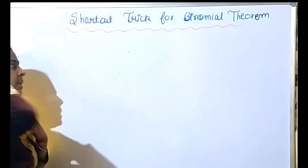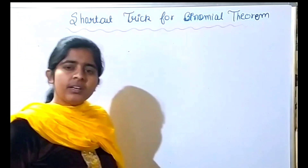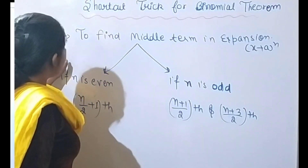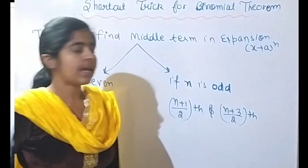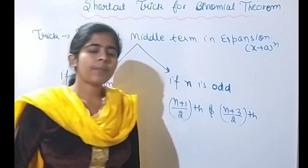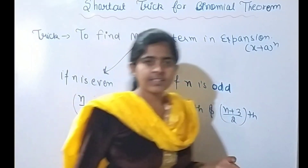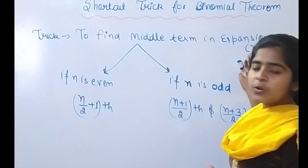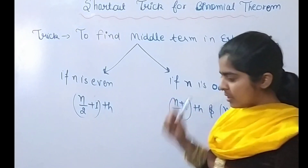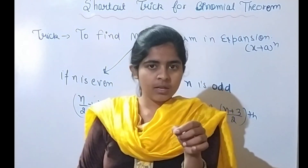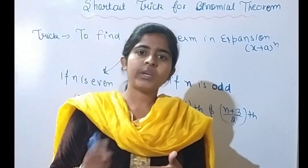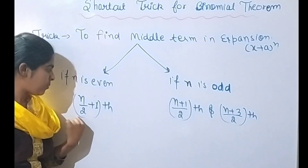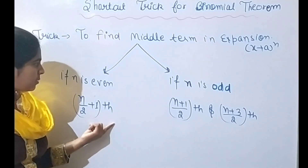Next is the middle term — that is very important, and also the independent term. The next trick is to find the middle term in the expansion of (x + a)^n. To find the middle term, we need to check whether n is even or odd. If n is even, then there is one middle term, which is the T(n/2 + 1) term.